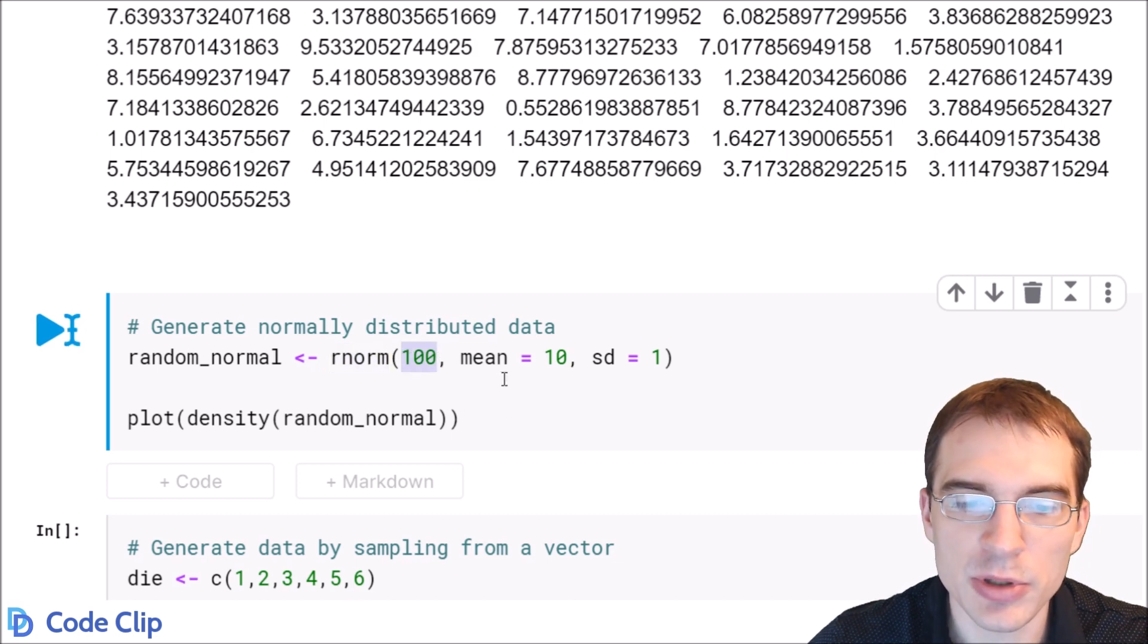Again we're going to get 100 numbers. And then we just need to pass in some arguments to define the distribution we are drawing from. So here we're going to center it on 10 with a standard deviation of 1. And we're just going to generate these numbers and make a plot of the result.